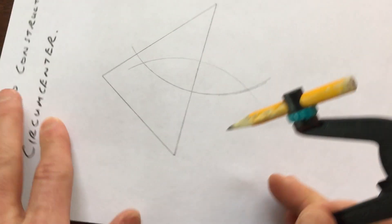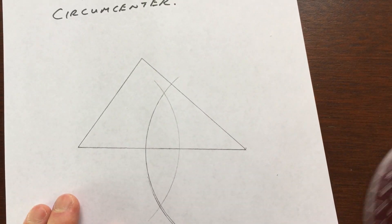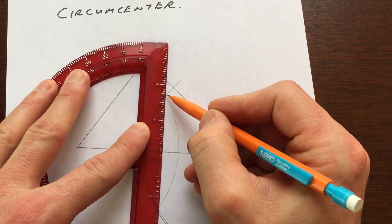Now you can see that we've got two points of intersection here and here, and we're going to draw a line through those two points, and that's going to be our perpendicular bisector of the side of our triangle.